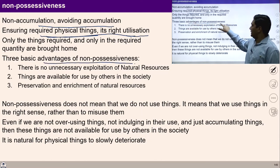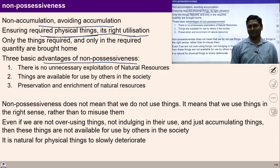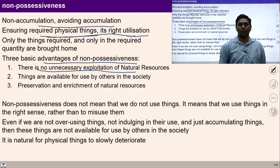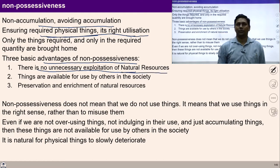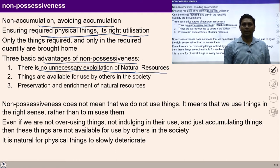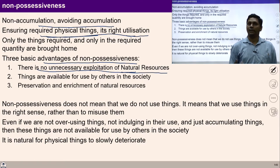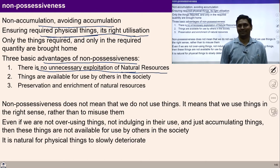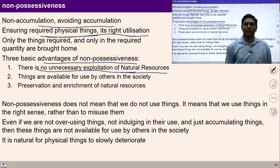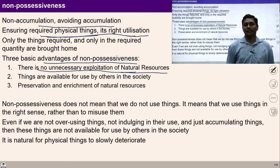There are three advantages of non-accumulation or non-possessiveness. The first advantage is that we avoid exploitation of natural resources. Under the mindset of accumulation, all the facilities we collect unnecessarily come from the rest of nature. Whatever physical and materialistic things are around you come basically from nature — from different orders: material order, bio order, animal order. All these orders contribute to physical facilities, and these are our natural resources.